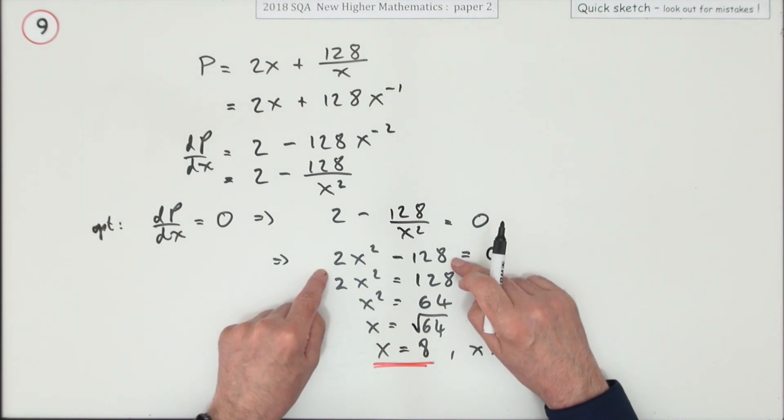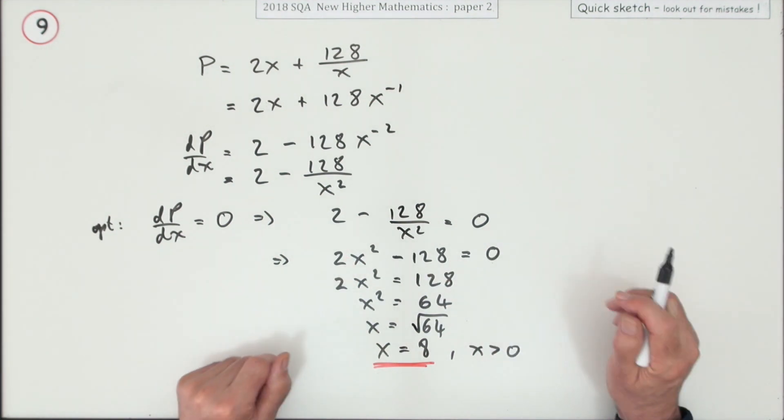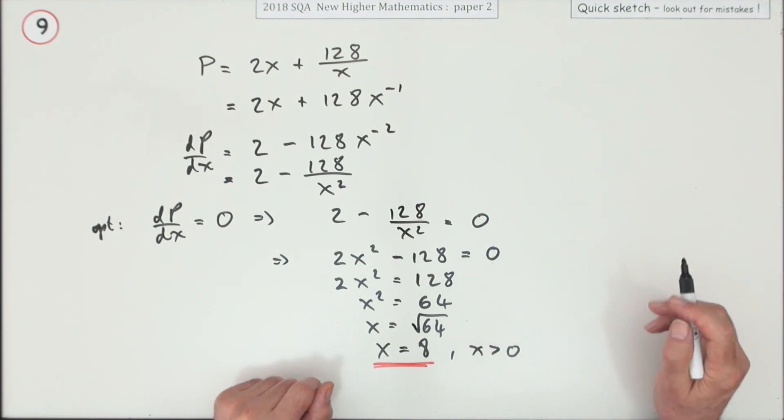Well you could have left that and factorized, you know, take out the 2 and then you get the difference of two squares because it'll be x squared minus 64, x minus 8, x plus 8, pick out the right one.